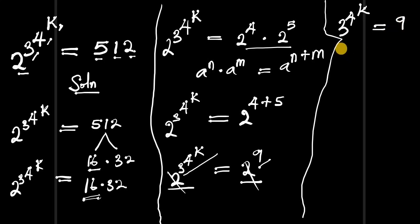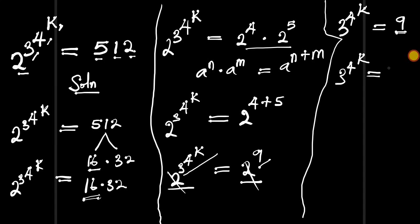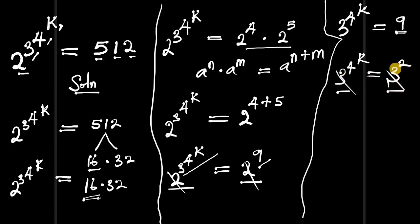Now, 9 is a perfect square. We have 3^2 equals 9, so we can write 3^(4^k) equals 3^2. The bases are the same again, so we cancel them out and compare exponents: 4^k equals 2.